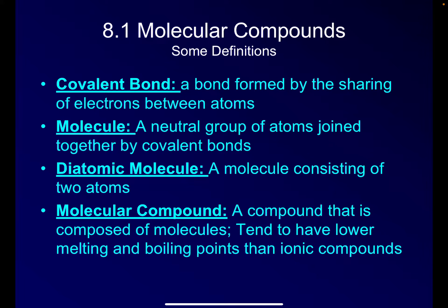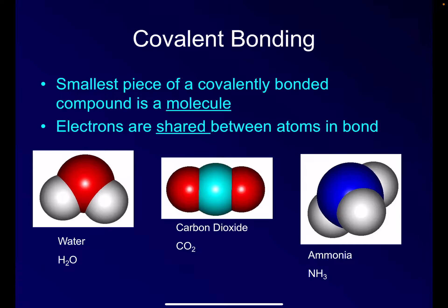So here's some definitions I'd like you to write down. So pause the video and write them down. Covalent bonding is between two atoms, two or more atoms. The smallest piece of a covalently bonded compound is called a molecule. So if you recall, in the ionic compounds, we had formula units. That was the lowest whole number ratio.